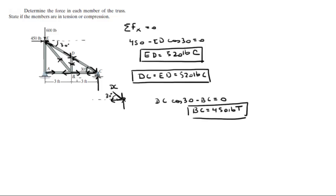And if you go to joint B, you have one force going to the right of 450. So the force going to the left, AB, is equal to BC, which is equal to 450 pounds — again, in tension.